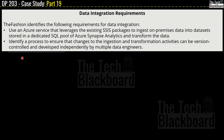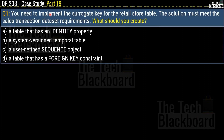Question number one: You need to implement the surrogate key for the retail store table. The solution must meet the sales transaction dataset requirements. What should you create? Options are: a table that has an identity property; a system-versioned temporal table; a user-defined sequence object; or a table that has a foreign key constraint.